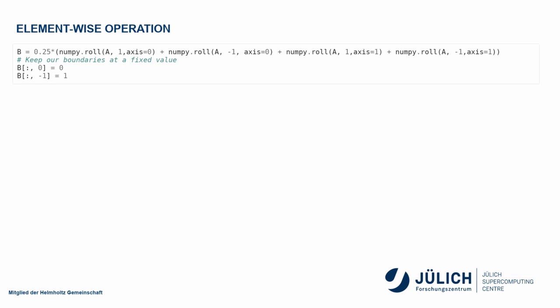This line does the same thing as our nested loop. It shifts A along the two axes, and here in the end, I also reset my boundary conditions.